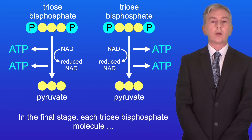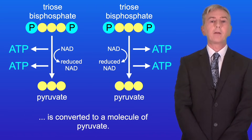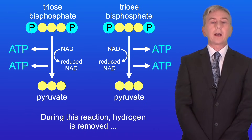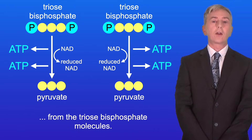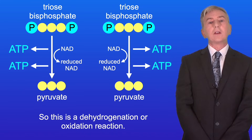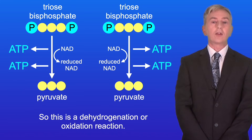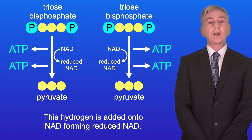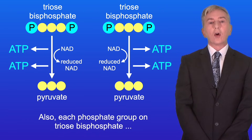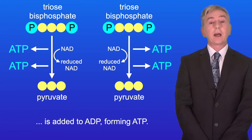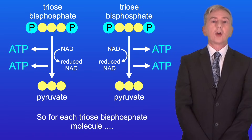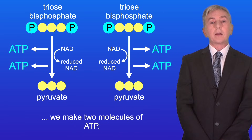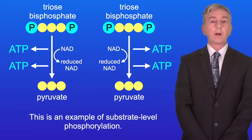In the final stage, each triose bisphosphate molecule is converted to a molecule of pyruvate. During this reaction, hydrogen is removed from the triose bisphosphate molecules, so this is a dehydrogenation or oxidation reaction. This hydrogen is added onto NAD, forming reduced NAD. Also, each phosphate group on triose bisphosphate is added to ADP, forming ATP. So for each triose bisphosphate molecule we make two molecules of ATP, and this is an example of substrate level phosphorylation.